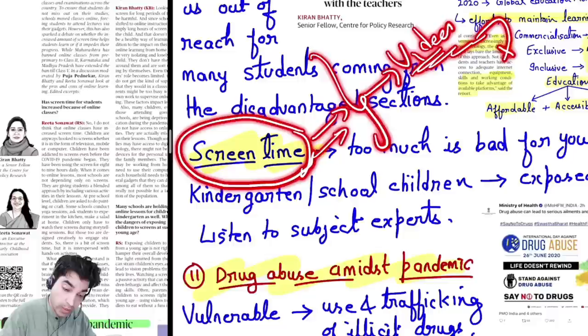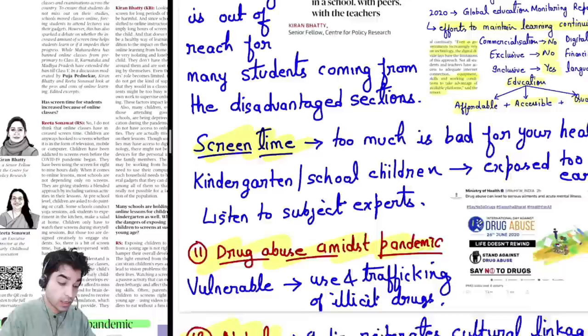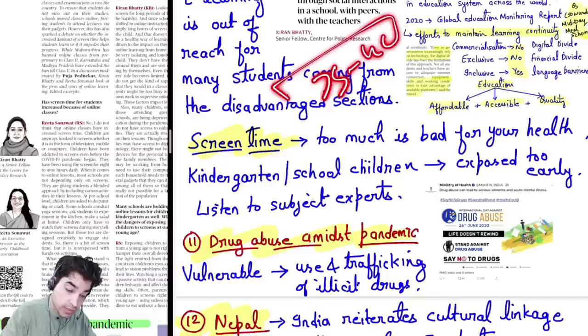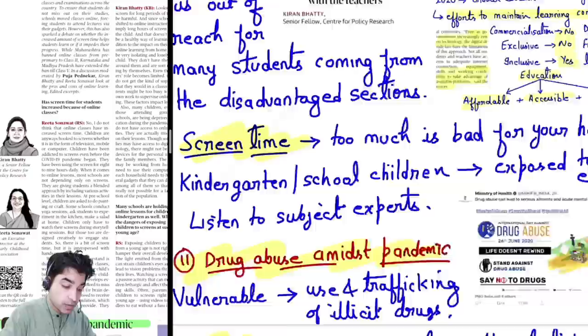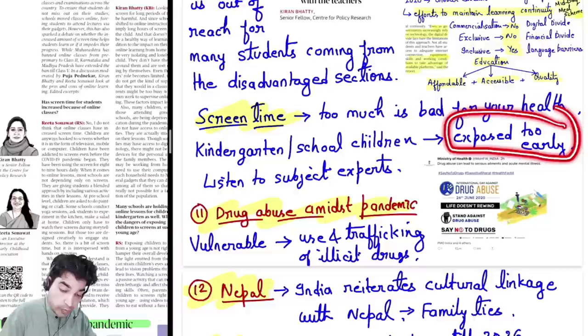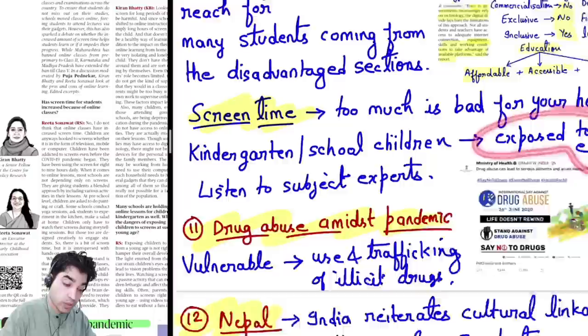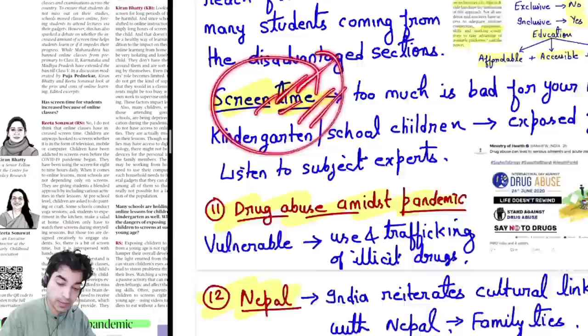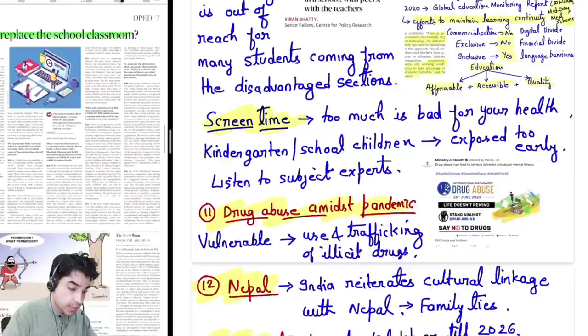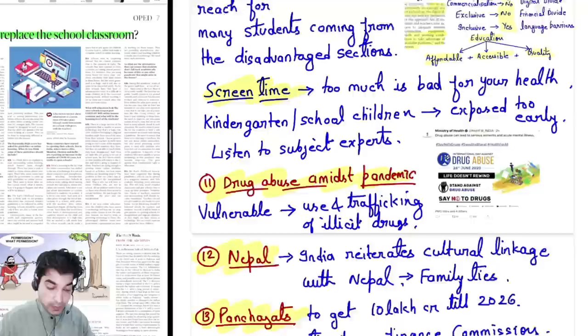E-learning is out of reach for many students due to financial challenges and digital divide — students from disadvantaged sections are further marginalized. Another big problem is screen time. If you are watching videos all day on different subjects, your retention will be very low and there will be several other side effects. Screen time should not be excessive — it is bad for health. In 35-40 minutes, we try to cover everything related to current affairs and answer writing. Also, exposing small children in kindergarten and school to digital education so early is not good — their mental and physical growth is yet to come, and researchers and subject experts all say that children should not have excessive screen time.